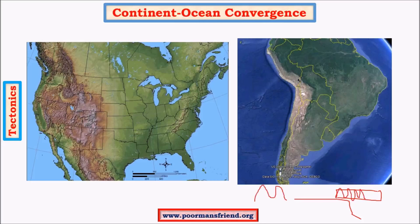These sediments due to compression undergo folding. This wavy-like structure is called folding, and this downward bend is called a syncline and the upward one is called an anticline. So these upward and downward bends are called synclines and anticlines.